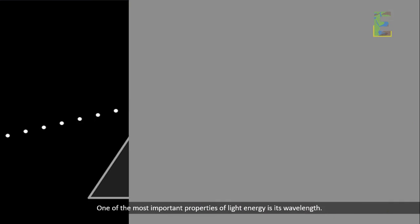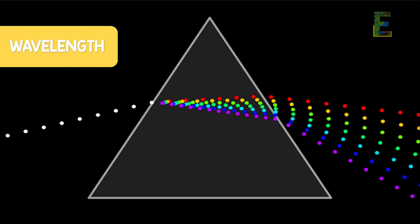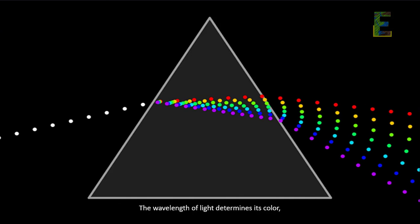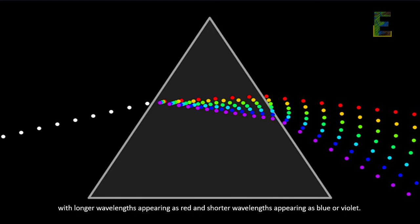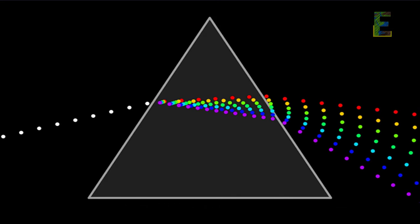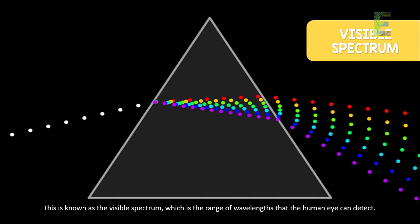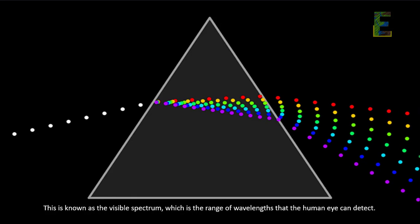One of the most important properties of light energy is its wavelength. The wavelength of light determines its color, with longer wavelengths appearing as red and shorter wavelengths appearing as blue or violet. This is known as the visible spectrum, which is the range of wavelengths that the human eye can detect.